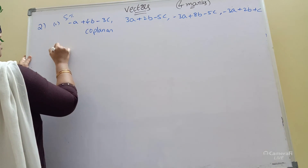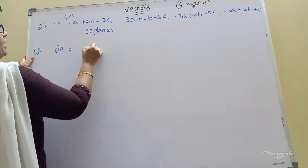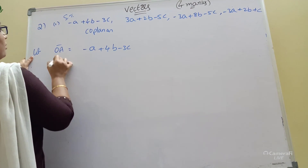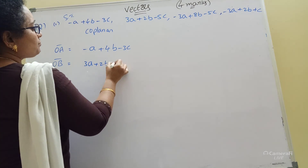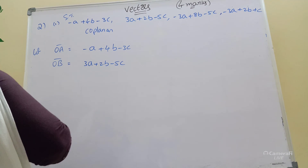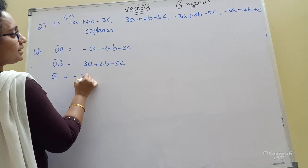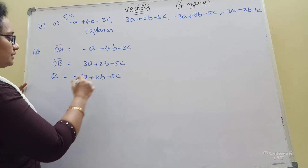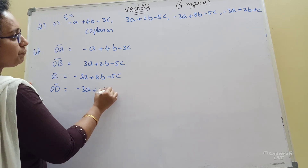So let OA bar equal to minus A plus 4B minus 3C. OB bar equals 3A plus 2B minus 5C. OC bar equals minus 3A plus 8B minus 5C.